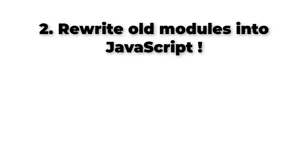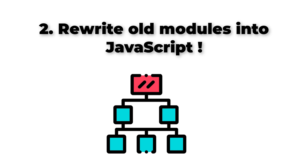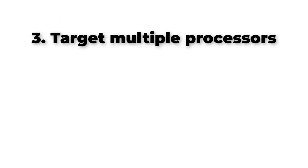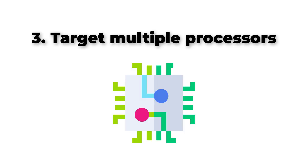The second place to use WebAssembly is where you need to reuse old C or C++ modules instead of rewriting them into JavaScript. Big tech companies from the 20th century have most of their code base in C or C++, and it is a costlier operation to convert everything into JavaScript just to target their web audience. The third place is where you are creating various compilation targets, as a single WASM compilation enables it to run on various processors.